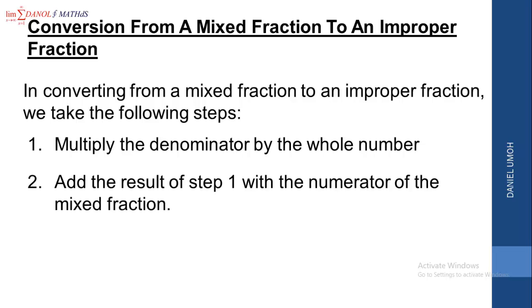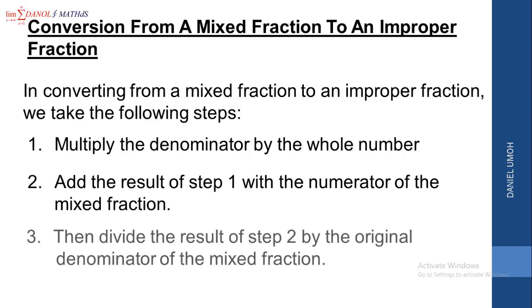That is, when you multiply the denominator by the whole number, you get an answer. Then you add that answer with the numerator of the mixed fraction. Step 3: after this, we divide the result of step 2 by the original denominator of the mixed fraction. I hope you understand these steps. A classical example will help you understand more clearly.